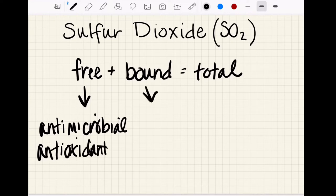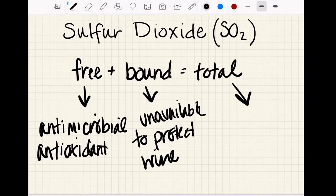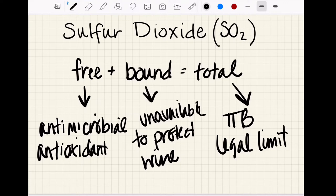The bound portion is unavailable to protect wine. When it's added, it will bind with different constituents such as anthocyanins or sugars or proteins or other things in the wine, so it'll be bound up and unavailable. But it's important because it's part of the total, and we care about the total because the Alcohol Tax and Trade Bureau who regulates the wine industry has a legal limit for total SO2 and that's 350 ppm.